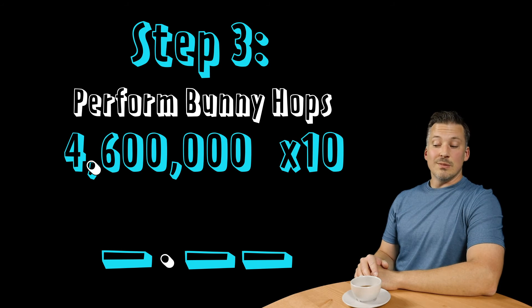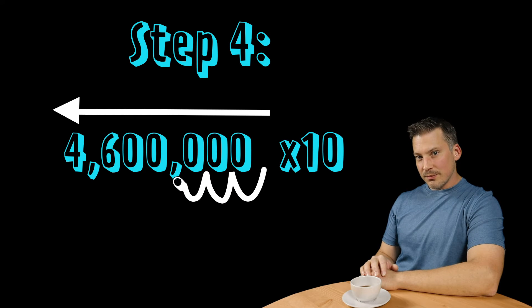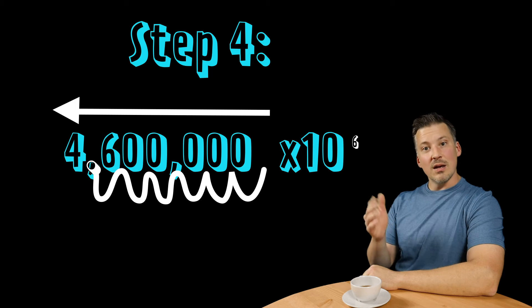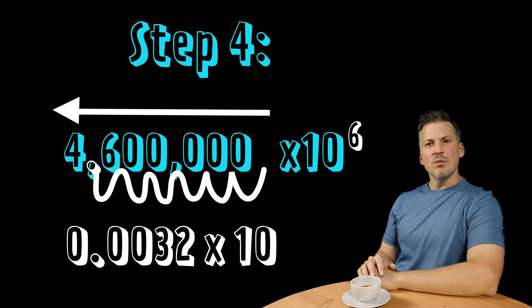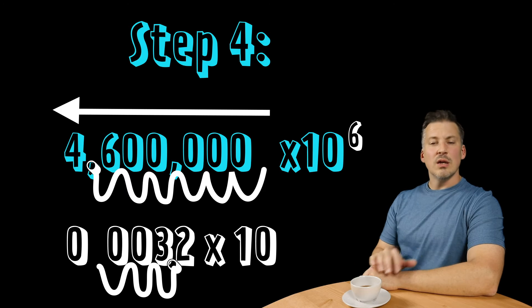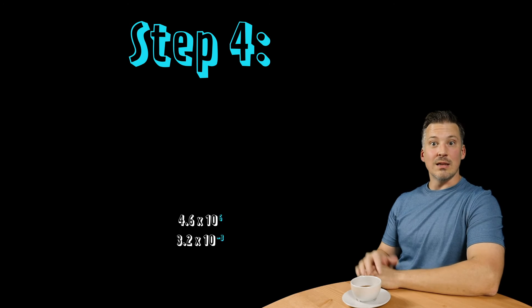And then, last but not least, step four: If you bunny hop to the left, you have to add those number of bunny hops to the exponent of 10. If you move to the right, you have to subtract the number of bunny hops from the exponent. And that's it. It's literally that simple.